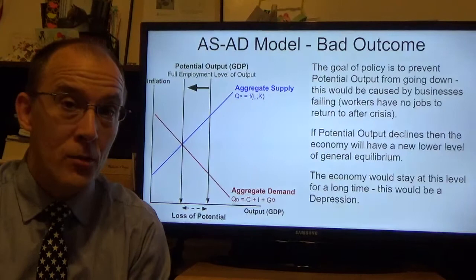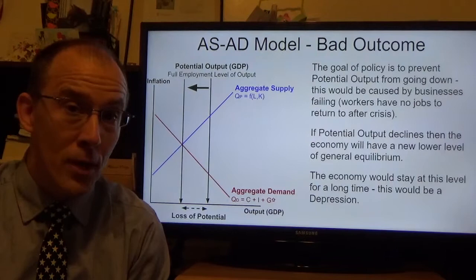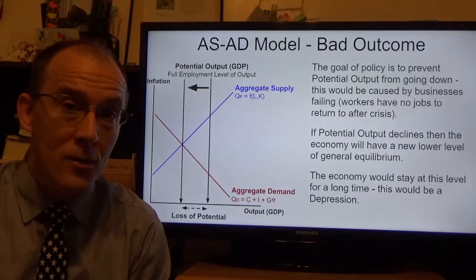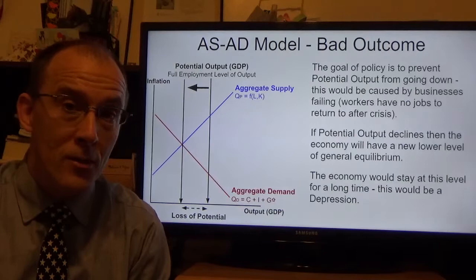If the level of potential output does collapse, if we lose an awful lot of business organization, that's when we start to worry about sinking into a depression. Basically, the level of general equilibrium in the country would be lower and there would be no good way to move the economy back out in the long run.